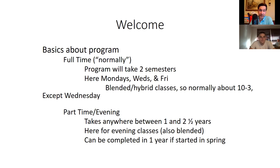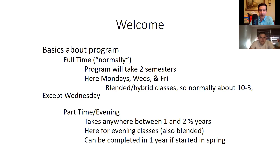For the part-time or evening classes, these take anywhere between one and two and a half years. If you're doing classes part-time we need you to take at least two classes per semester because the accreditor only allows us to have you in the program for a certain amount of time. The evening classes are also blended or hybrid. These can be completed in a year if started in the spring — you can knock out most of the prereqs in the fall and then pick up in the spring, wrapping up through spring, summer, and fall.